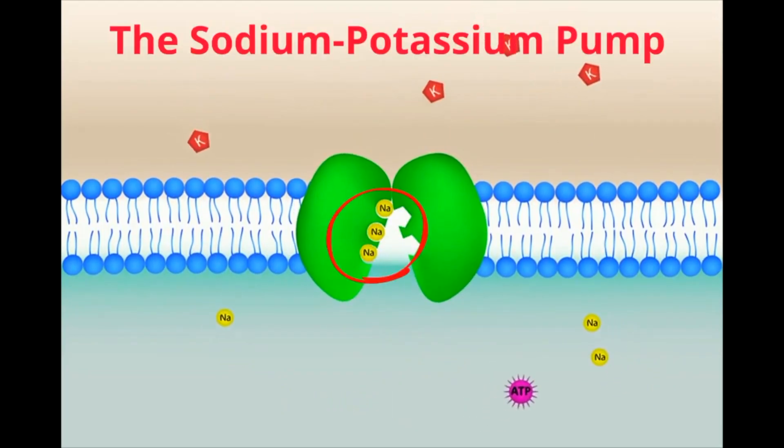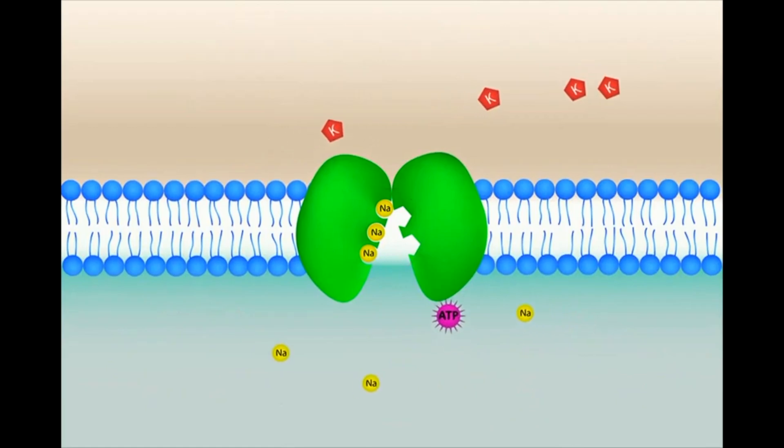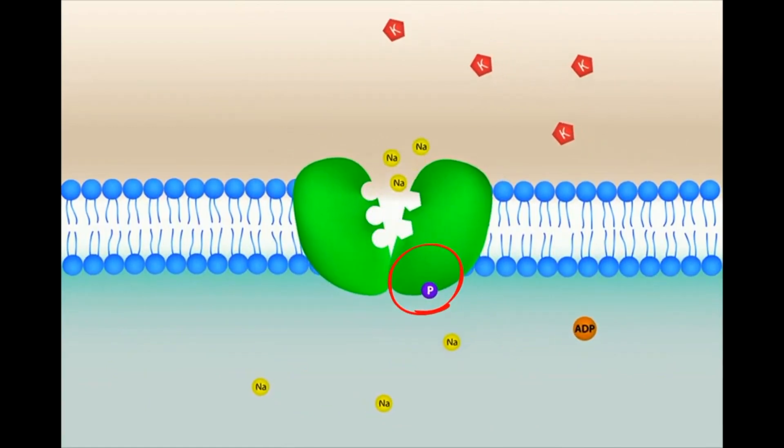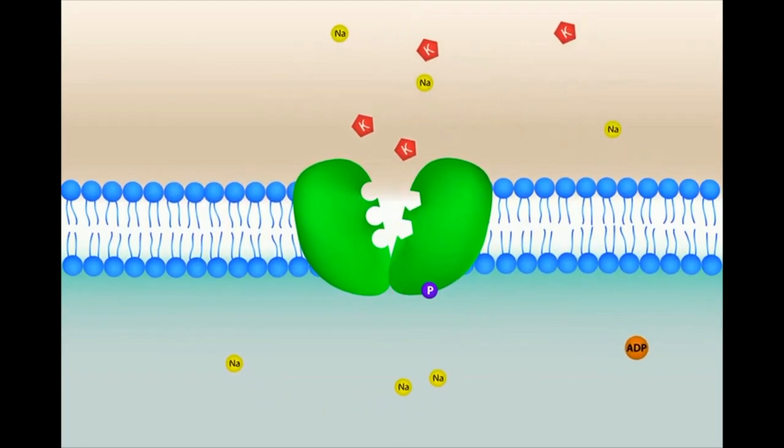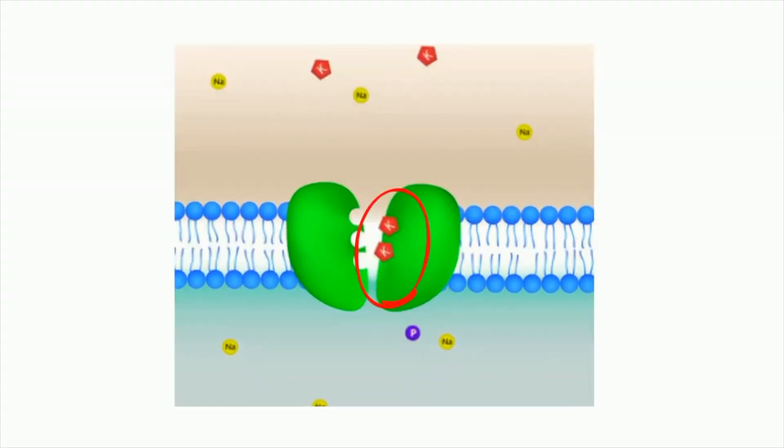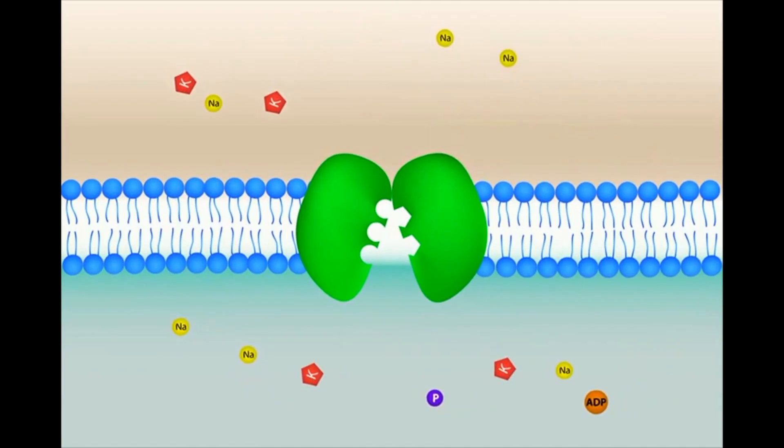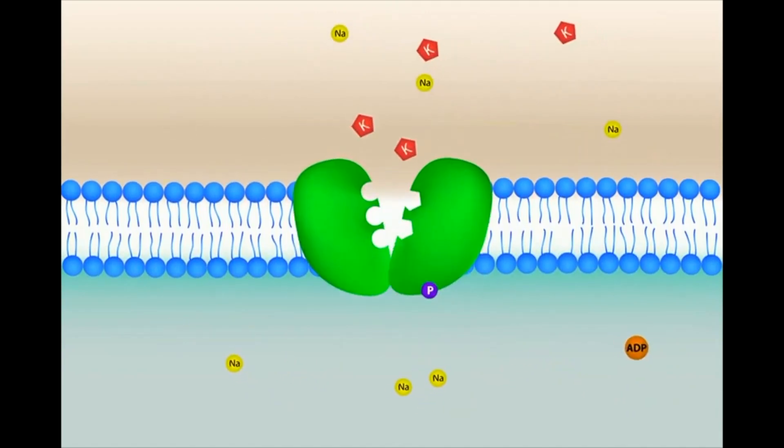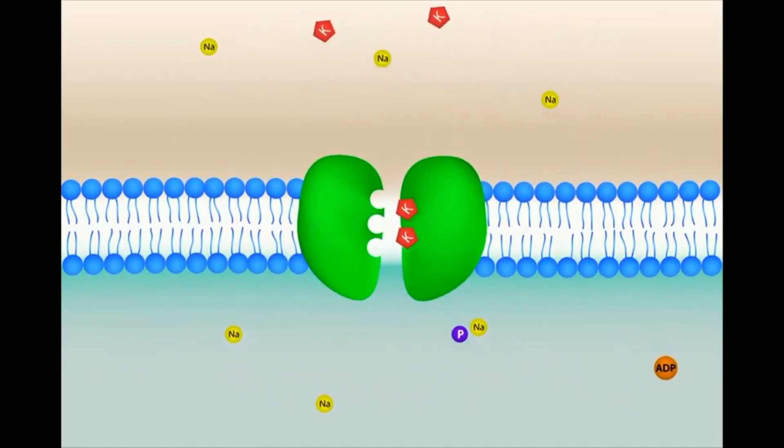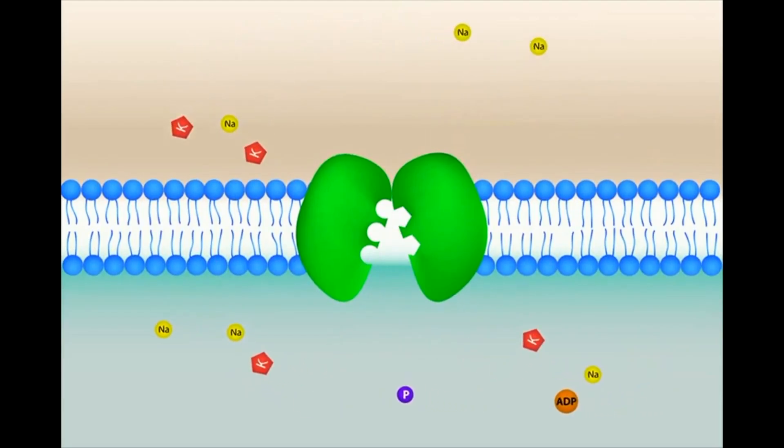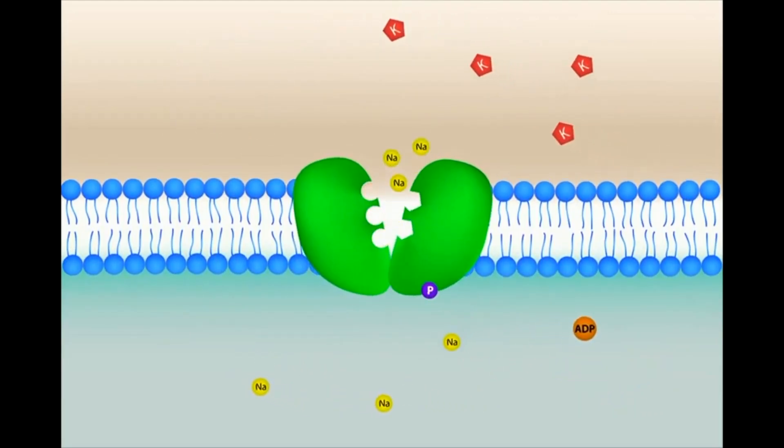Three sodium ions attach to the carrier protein. ATP attaches a phosphate to the carrier protein, and it changes its shape. This allows three sodium ions to leave the cell, and then two potassium ions attach to the carrier protein. The phosphate detaches from the protein, and it changes shape once again, and the potassium travels into the cell. This allows sodium and potassium to go against the concentration gradient.